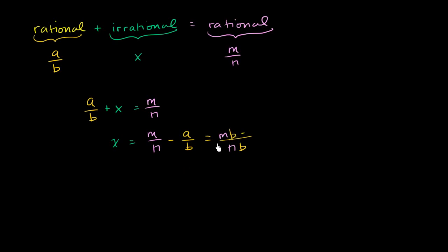mb minus a/b is the same thing as na over nb. So minus na. All I did is I added these two fractions. I found a common denominator.